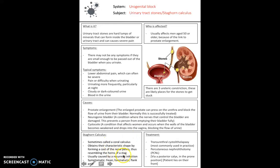Another important condition is the staghorn calculus, which was emphasized in the lecture. It forms in the shape of the renal pelvis, shown as the brown part of this diagram. It's usually caused by recurrent infection, and patients typically present with fever, hematuria (blood in the urine), and flank pain.